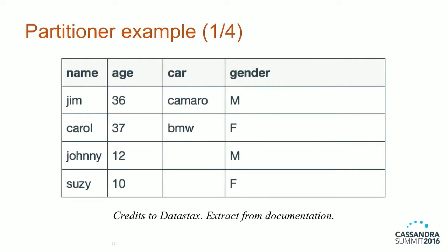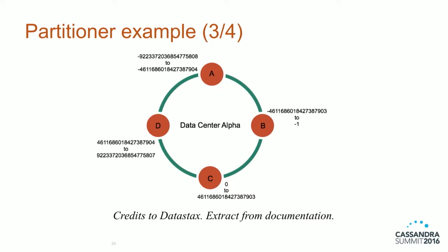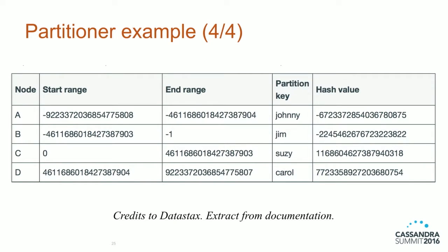Here's an extract from the DataStax documentation. You have a table with the name being the partition key. When you apply the hash function — Murmur3 — you convert the partition key to a hash value. With v-nodes, each node has one range of tokens. We can say: node A's range is from X to Y. The partition key hash value falls in that range, so we know which node it's on.